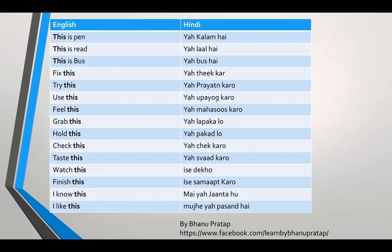When I say 'this is a pen' — the Hindi meaning of 'this' is 'yah' and 'pen' is 'kalam' — so: 'yah kalam hai.' This is red — 'yah lal hai.' This is blue — 'yah blue hai.' This is yellow — 'yah yellow hai.' This is a bus — 'yah bas hai.'